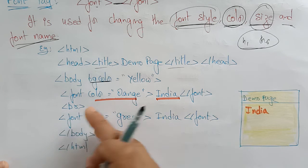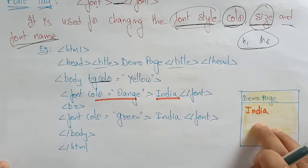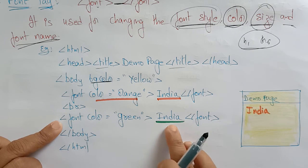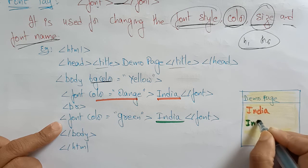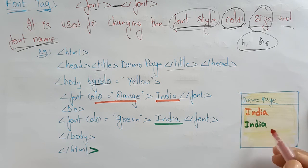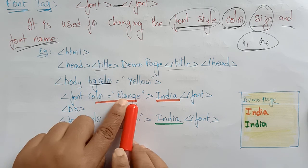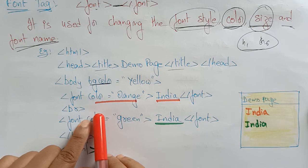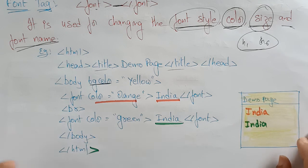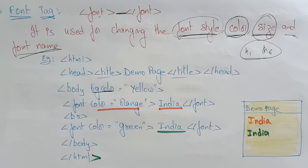A break tag is a standalone tag — it skips one line and the next message prints on the next line. Then another font tag with color set to green — 'India' is printed in green color. Body and HTML tags are closed. So with the font tag you can change color, and you can also change size by writing font size equal to a value like 20, 35, 40, 48. You can change the style and name as well — using different attributes you can create different types of fonts.